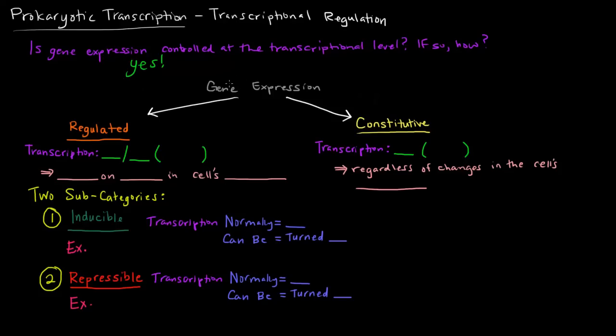When it comes to gene expression in prokaryotes, the gene expression is either regulated or constitutive. Constitutive, the definition is pretty simple. Essentially, what is going on in constitutive gene expression is that transcription of that particular gene is on, always. That's what constitutive means. Transcription of that particular gene will always be on, regardless of changes in the cell's environment.